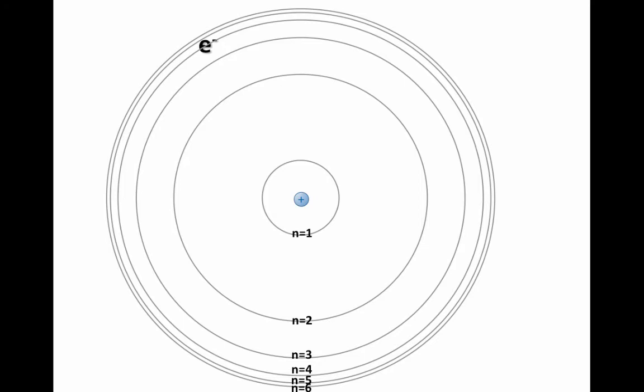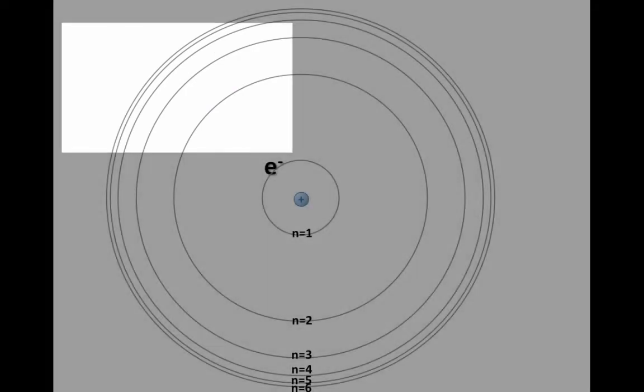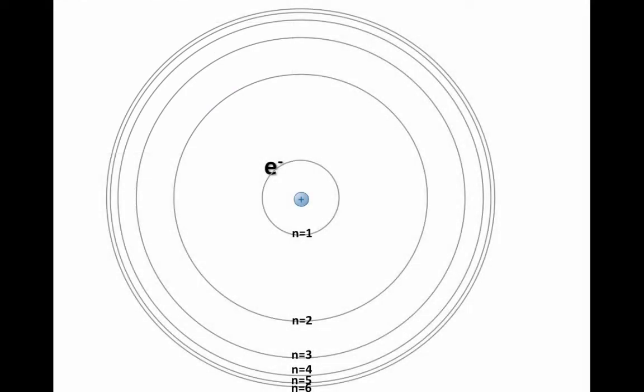And where did that energy go? And in what form was that energy given off? Let's watch that transition again. The electron moves from n equals 4 back to n equals 1. And as it does, it releases a photon of energy in the form of light.